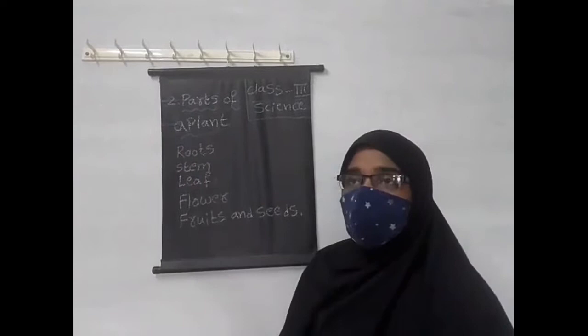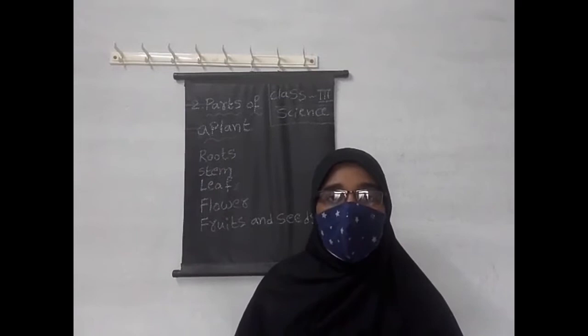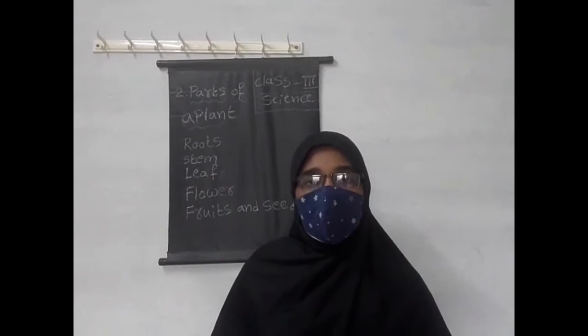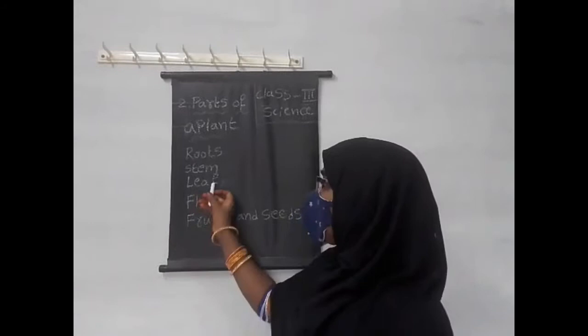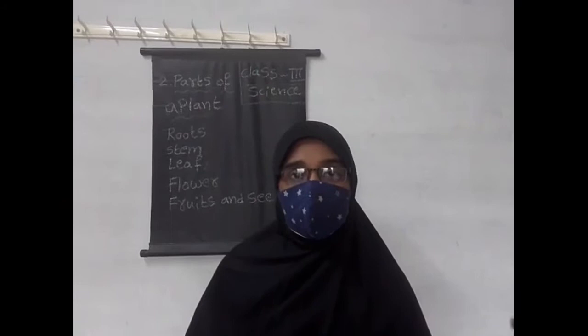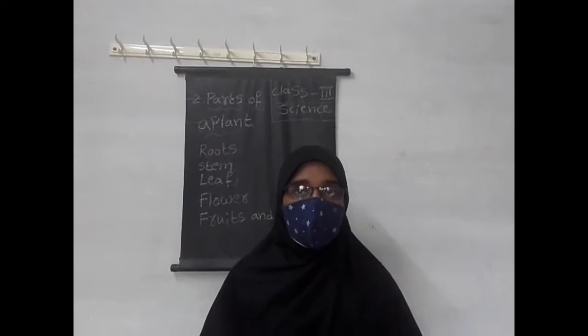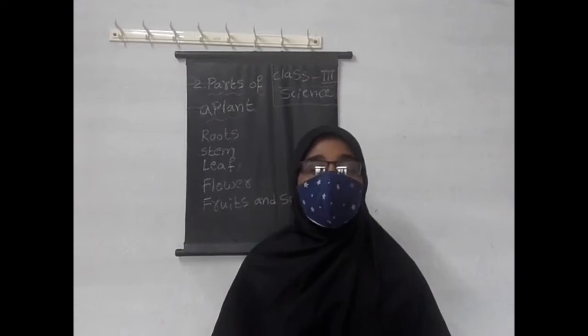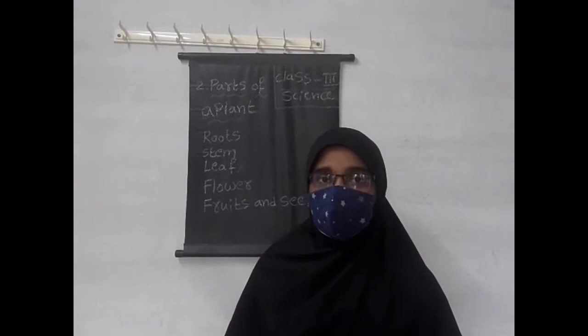Root is one of the parts of a plant which lies under the ground. Stem is another part of the plant which grows up above the ground. Leaf is also called as a food factory or kitchen to the plant because it prepares food and sends it to all parts of the plant.